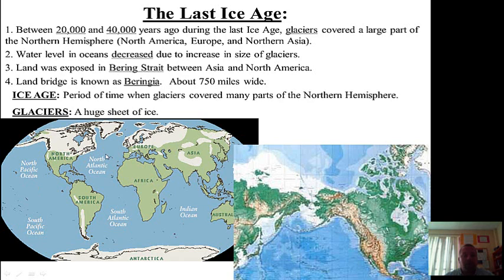A glacier is a huge sheet of ice. Glaciers are basically frozen water. So where did the water come from to form the glaciers? Well, the water came from rivers and lakes, ponds, places like that. But for the most part, the water came from the Earth's oceans — the Pacific Ocean, the Atlantic Ocean, and the Arctic Ocean.